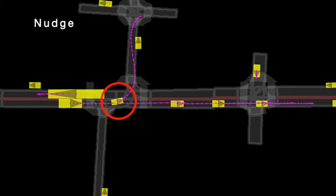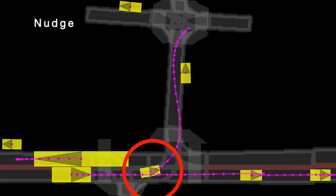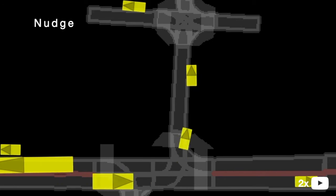Now, we showcase complex maneuvers and interactions exhibited by the simulated actors. In this first example, the actor nudges past a parked vehicle partially obstructing its lane.